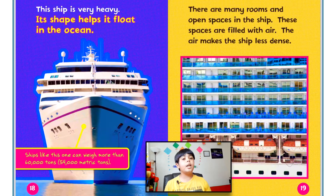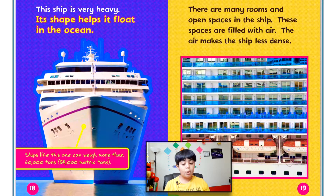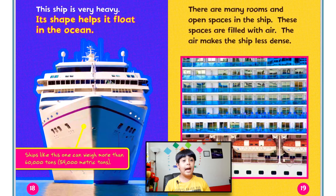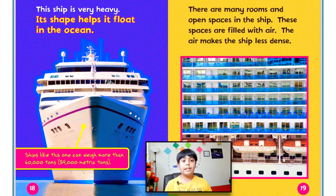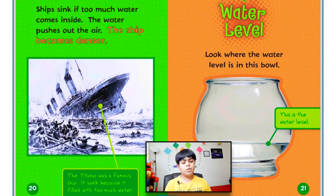This ship is very heavy, but its shape helps it float in the ocean. Ships like this one can weigh more than 60,000 tons — that's 54,000 metric tons, or 120,000 pounds. There are many rooms and open spaces in the ship. These spaces are filled with air, which makes the ship less dense. Ships sink if too much water comes inside — the water pushes out the air and the ship becomes denser.